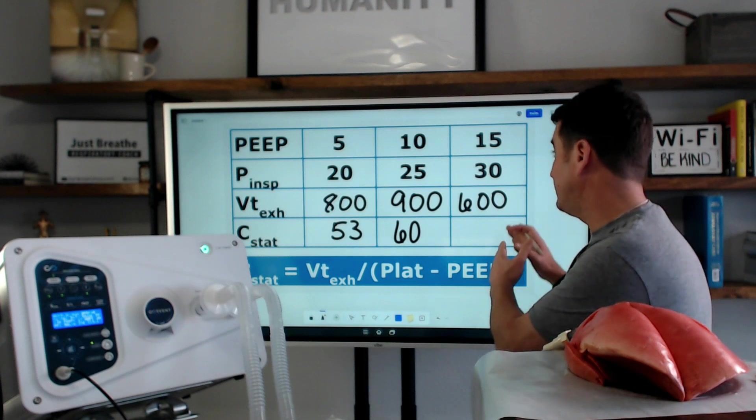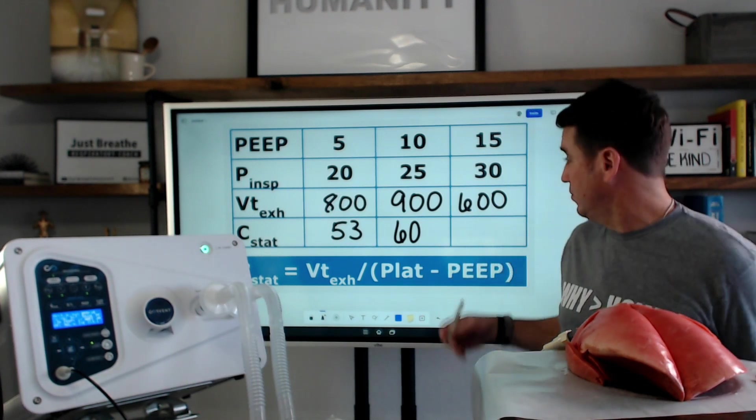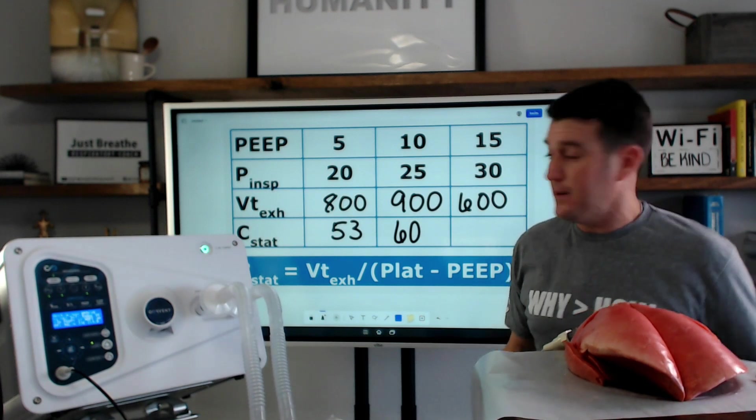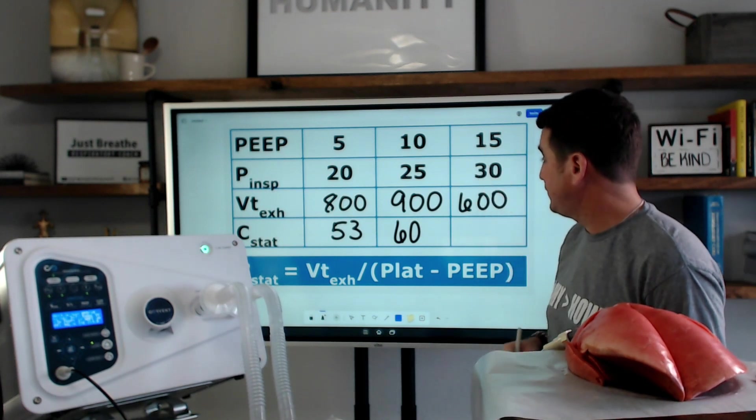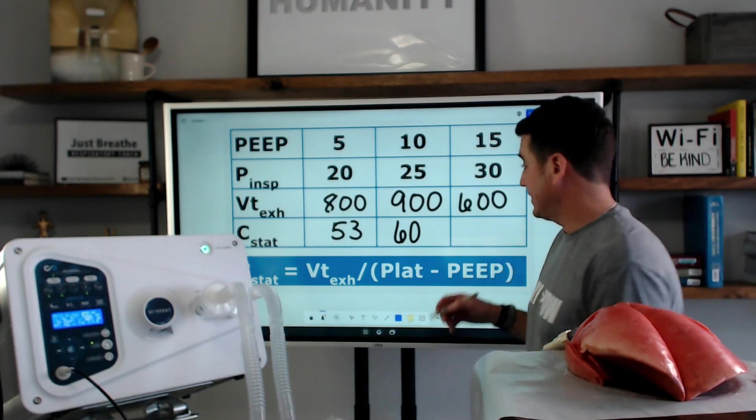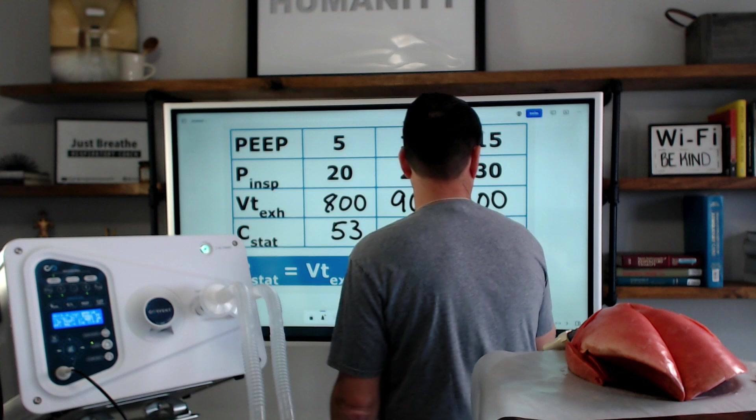When we look at the PEEP of 15, we see that we are going to do 600 divided by 30 minus 15. Again, it gives us 15. And we see that the static compliance here is 40.